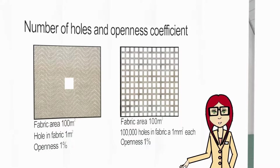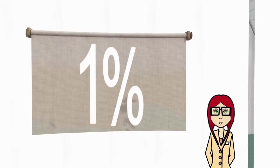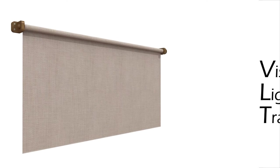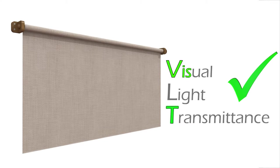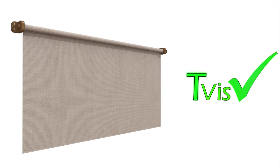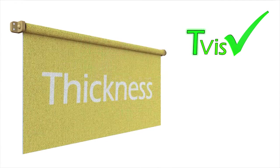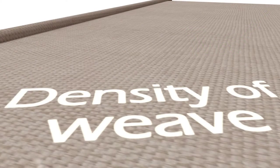In this extreme example, both of these fabrics have a 1% openness. The correct measure for the amount of light we receive through a blind is called visual light transmittance, or TVS, which takes into account all the properties of the fabric. TVS is affected by a variety of factors including colour, thickness, as well as the density of the weave and coatings on the fabric.